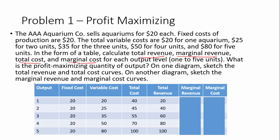What you need to do is build a table with your output in the first column, your fixed cost — which you can find in the description at $20 — and those will be the same no matter what the output level is, that's why they're fixed costs. We're also going to have the variable cost, which is laid out in the description as well. Fixed cost plus variable cost equals total cost, so you calculate that at each output level.